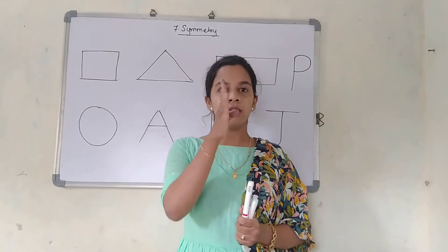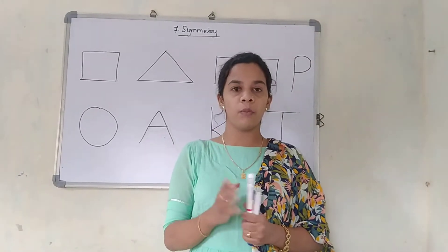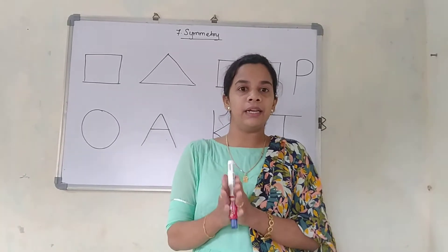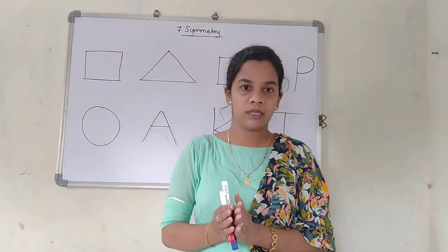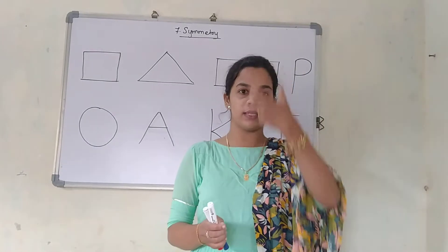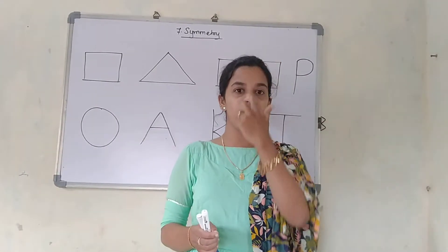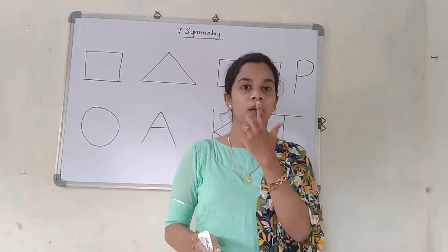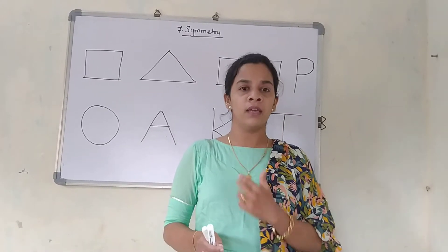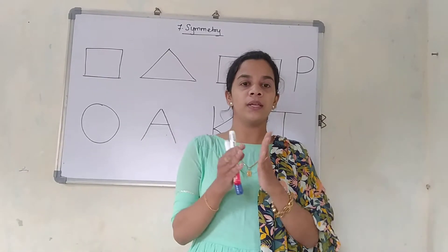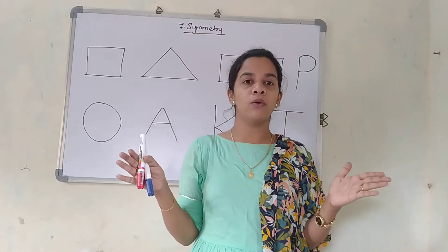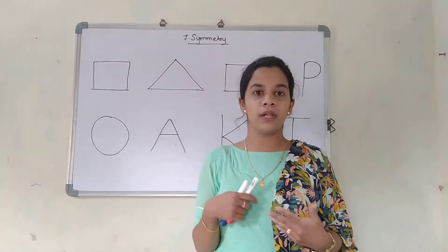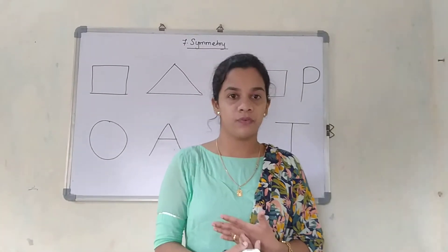Symmetrical means what? When you draw a single line from between — when you divide a particular thing — it should be clearly divided into two equal parts. For example, if you see a human body and you draw one line straight from between, from your head, passing through your nose and your lips equally, you can see your body will be equally divided into two equal parts. One part small and one part big — this will not happen. So that is called a symmetrical figure.